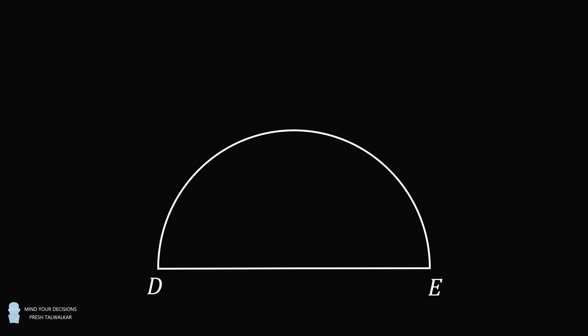Hey, this is Presh Talwalkar. Semicircle DE has a right triangle DEF placed over it, where F is exterior to the semicircle.